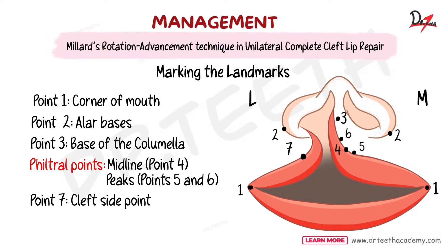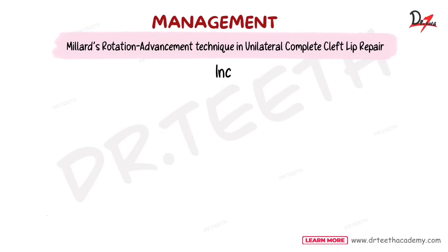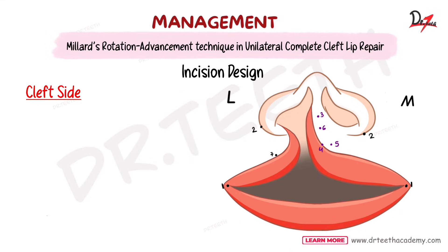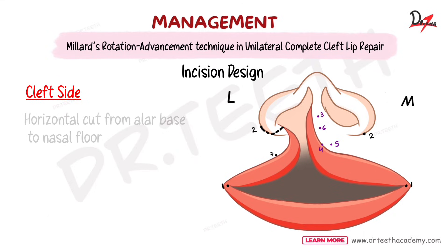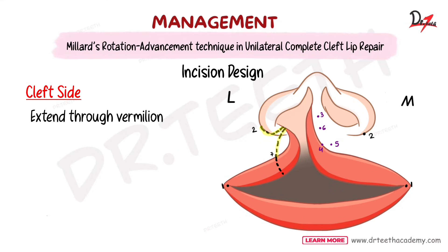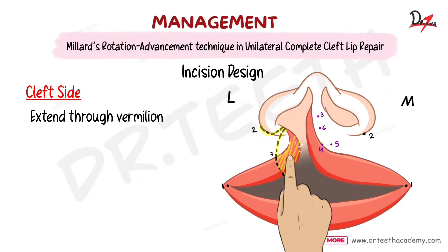These markings guide the incisions. On the cleft side (medial side), a horizontal cut is made from the alar base to the nasal floor, then connected vertically down to point 0.7, and extended through the vermilion. This exposes excess hypoplastic tissue in that region, which is then removed.